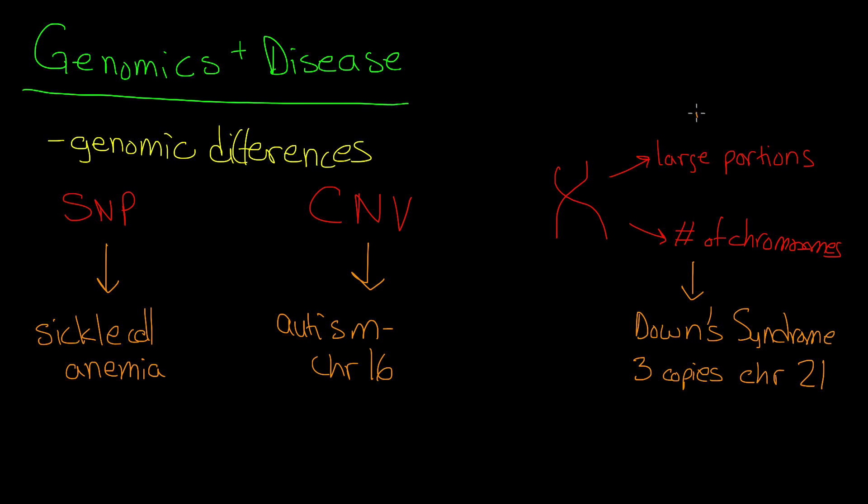And then for large portions, an example of this could be chronic myelogenous leukemia, which is a cancer of the bone marrow. And this is caused when chromosomes 9 and 22 swap portions of their DNA. And so that's where large portions of a chromosome are swapped.